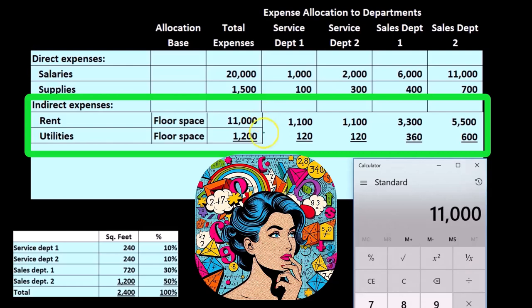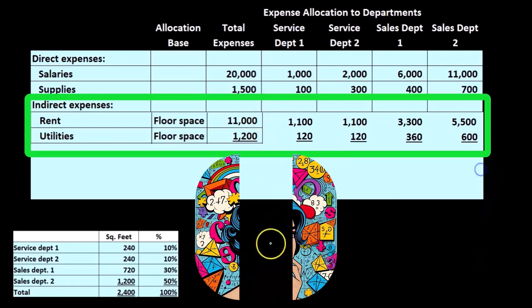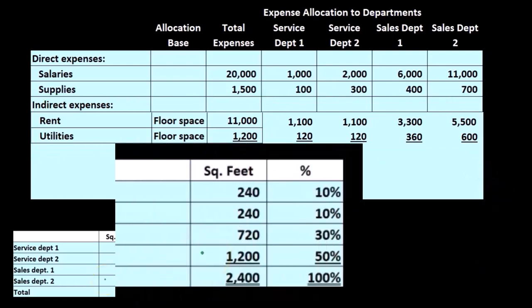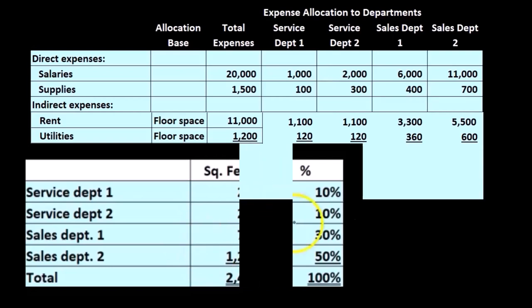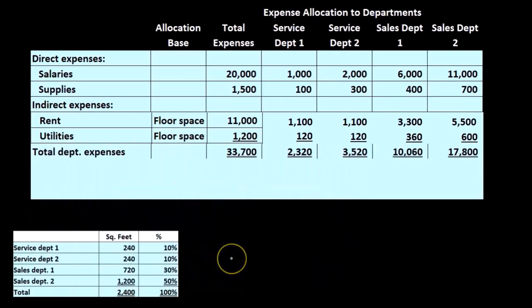All we did was allocate these two items out in accordance with these percentages — not because floor space has anything to do with the rent or utilities per se, but because we think it's a relatively good activity base to use to allocate out the rent and utilities expenses.